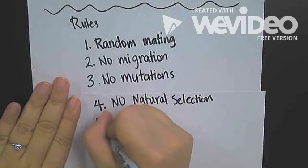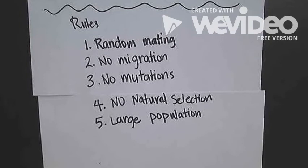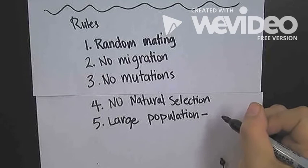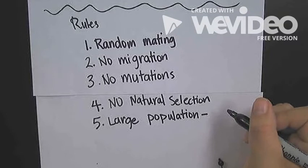And number five, you have to have a large population. This large population is just trying to minimize genetic drift. Genetic drift will affect smaller populations, and we saw this a little bit in our lab when our numbers before and after our simulation were close but different.